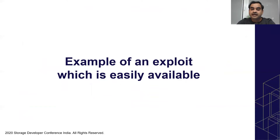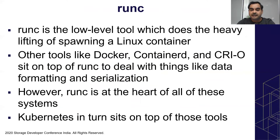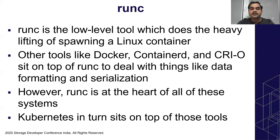Let's look at an example of an easily available exploit. RunC is a low-level tool that actually creates the container. Docker, ContainerD, and other tools sit on top of RunC and use it to do the actual task of creating the container. RunC is the heart of all these systems, and Kubernetes in turn sits on top of these tools. So Kubernetes calls Docker, which calls RunC to actually create a container.